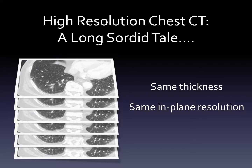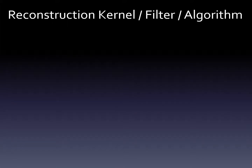One of the last types of chest CTs is the high-resolution chest CT. This has a confusing name that doesn't make a lot of sense — that's the long sordid tale. When this scan was first introduced, the only way to get very thin slices without averaging large parts of the body together was to image only a few sections of the lung and skip parts in between. These days our scanners are great, and most high-resolution chest CTs and standard chest CTs have the same thin slices. The biggest difference today, despite the name, is a parameter called the kernel, or filter, or algorithm.